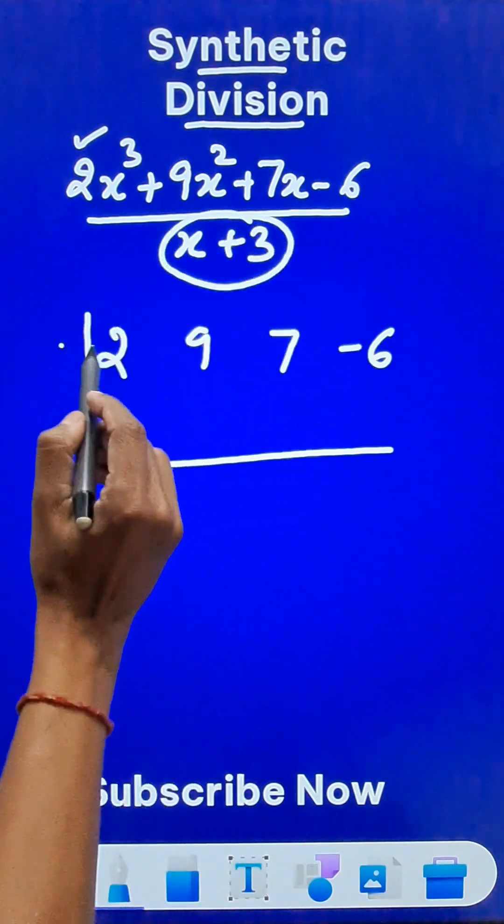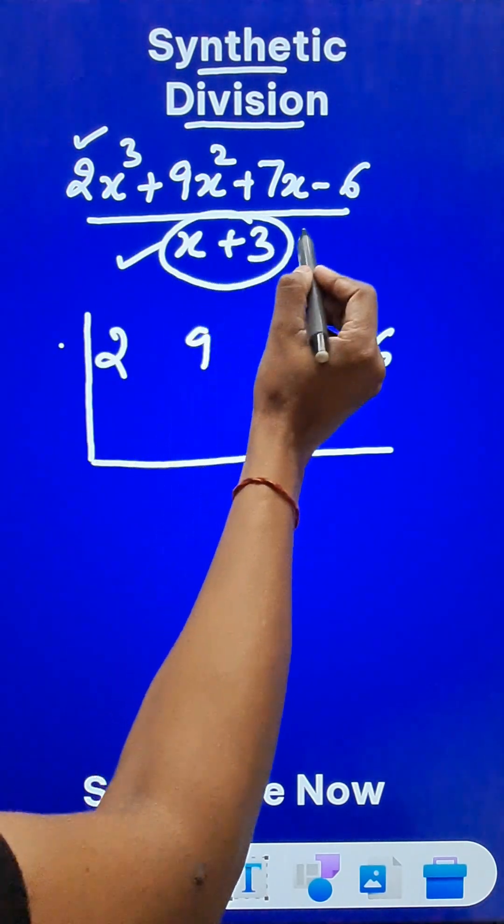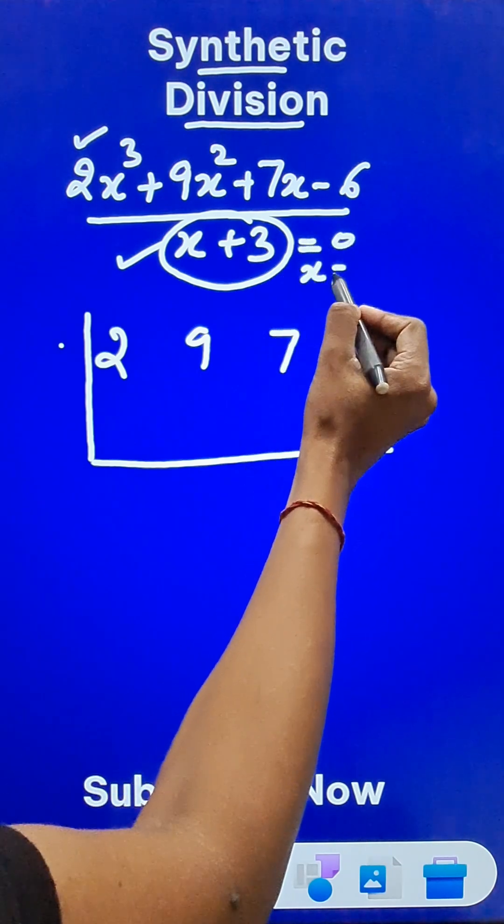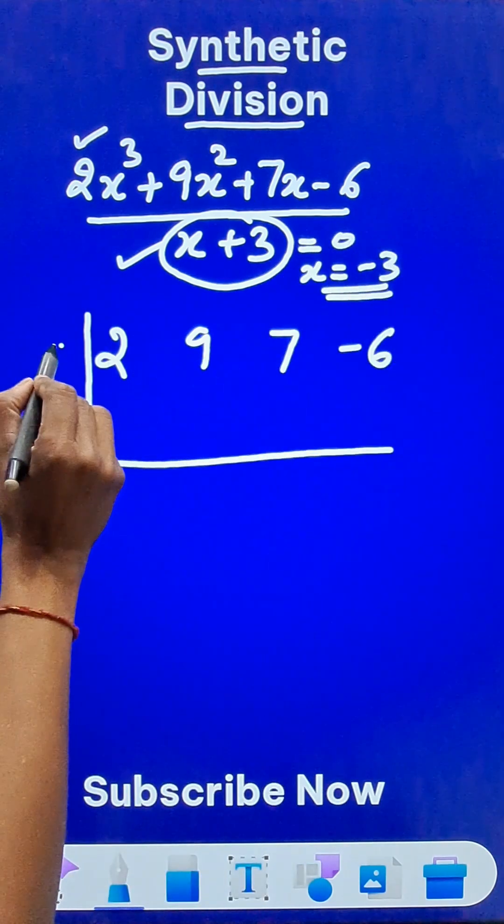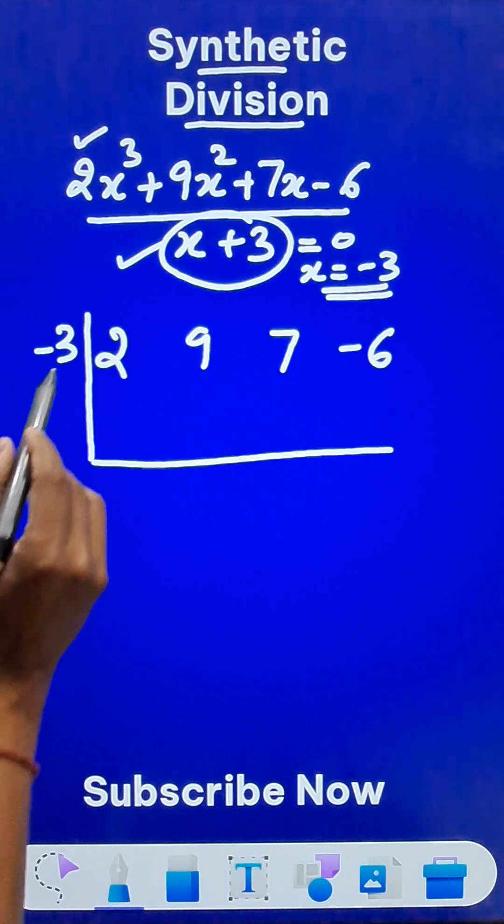since x + 3 is the divisor, if you put x + 3 equal to 0, you will get x equal to -3, right? This number -3 is to be written on the left side here.